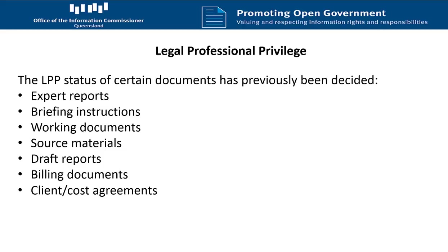The legal professional privilege status of certain documents that tend to come up in RTI Act applications has been previously decided. We have previously touched on expert reports, but generally confidential communications between a lawyer and a third-party expert will attract privilege where the communications are made for the dominant purpose of use in existing or reasonably anticipated litigation. Lawyers' briefing instructions to an expert will also constitute confidential communications made for the dominant purpose of use in litigation, and will, on their face, attract legal professional privilege.